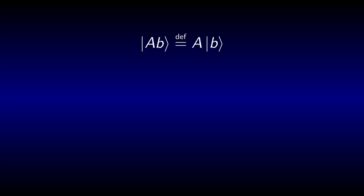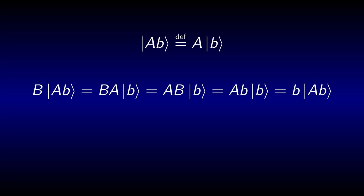Define the auxiliary function as A acting on the eigenvector b of B. Acting with B on Ab and using that A and B commute, we see that Ab is an eigenvector of B to the eigenvalue lower b. Because we assumed the eigenvalues to be different, it follows that A acting on b gives us something proportional to b. This is precisely the definition that b is an eigenvector to A.